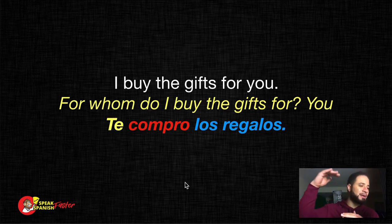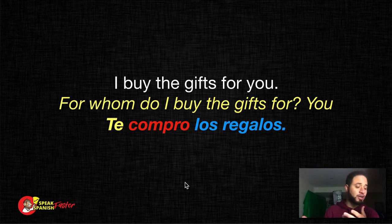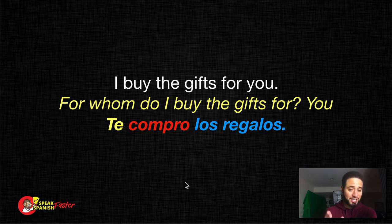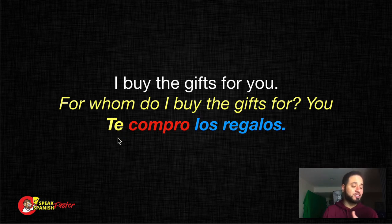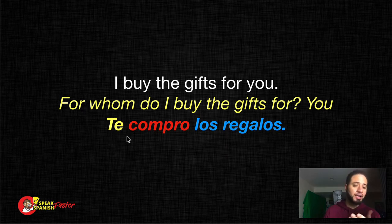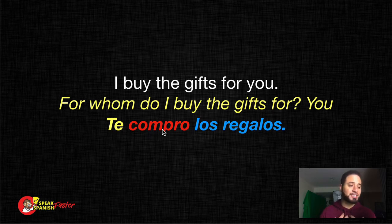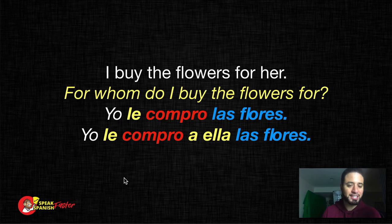I'm going in order — me, te, le — so you can stay on track. 'I buy the gifts for you.' For whom do I buy the gifts? For you. Buy is the action, the gifts is the direct object, and you is the indirect. You can remove the yo and say: te compro los regalos. The indirect object te goes in front of the verb compro. The full sentence would be yo te compro los regalos, but te compro los regalos works perfectly.